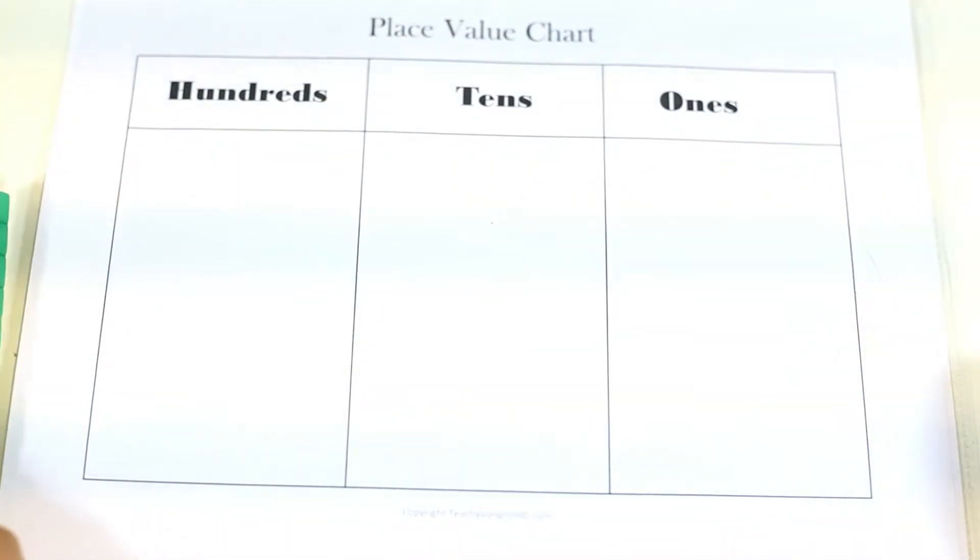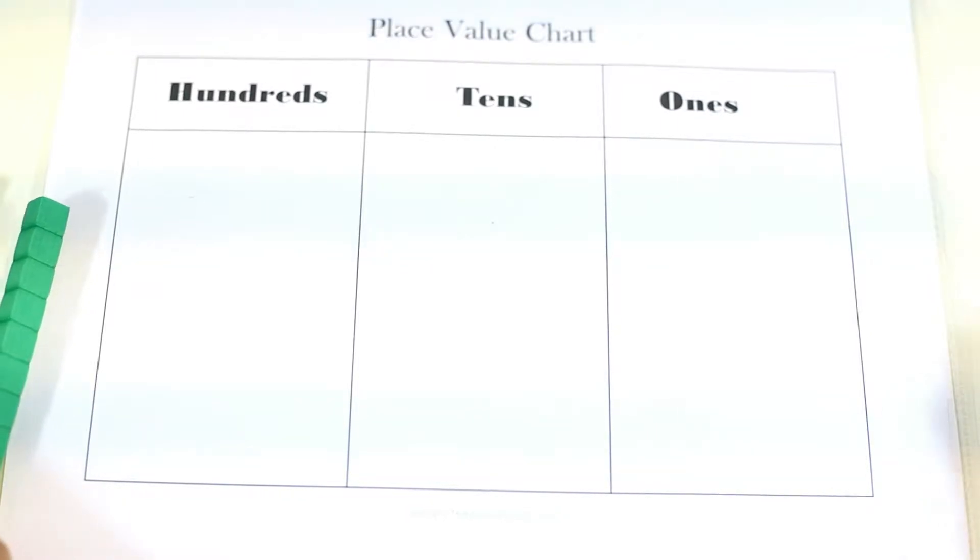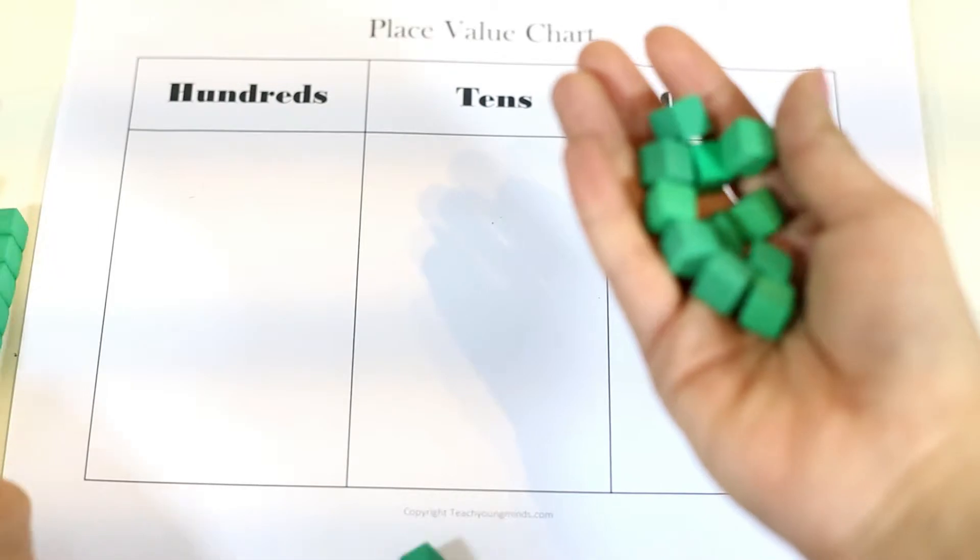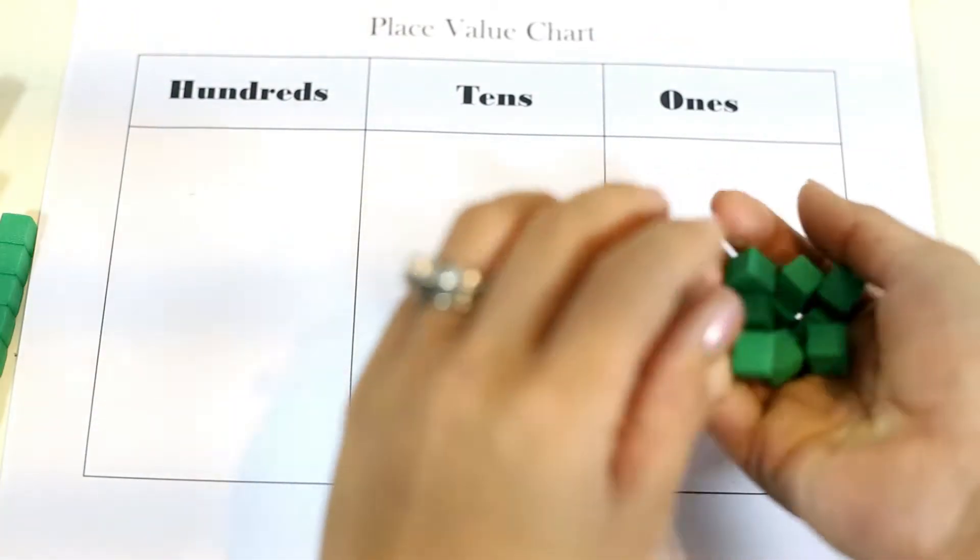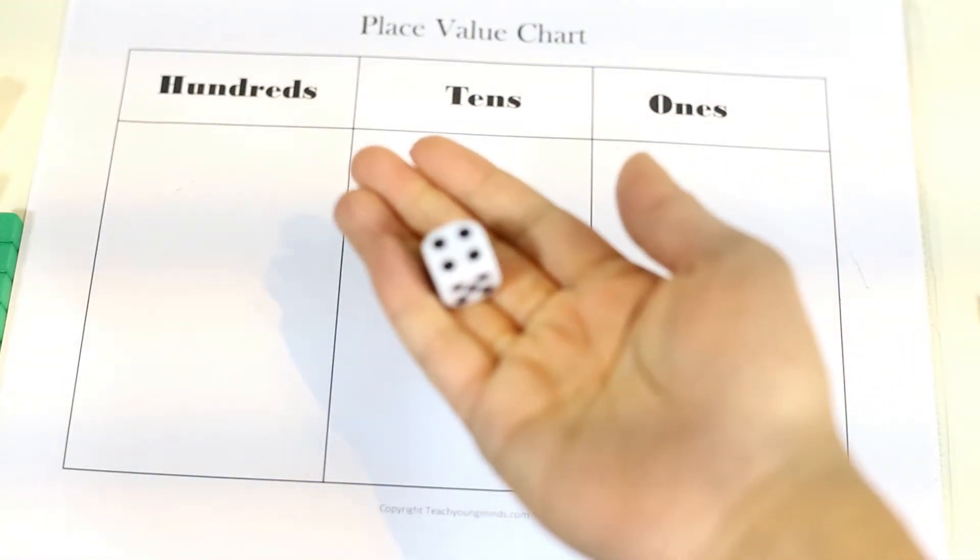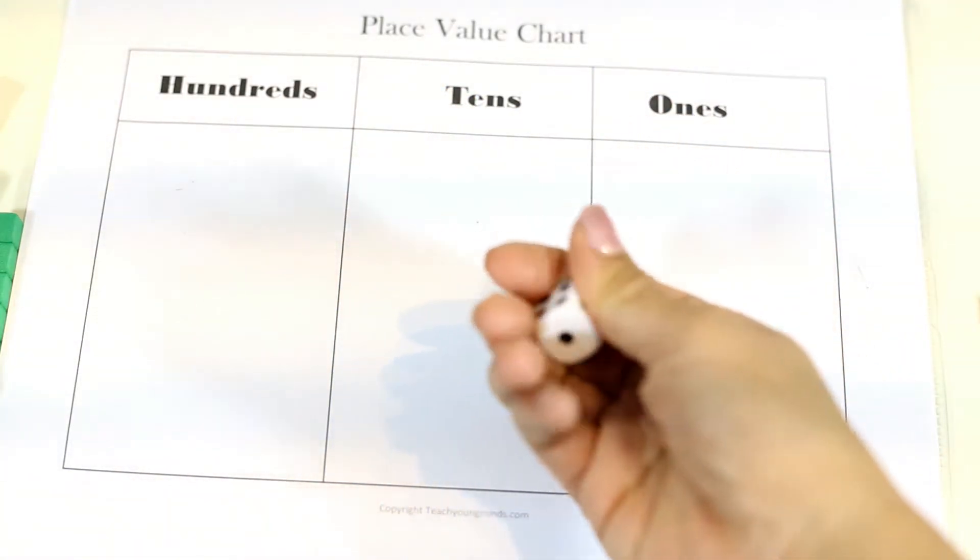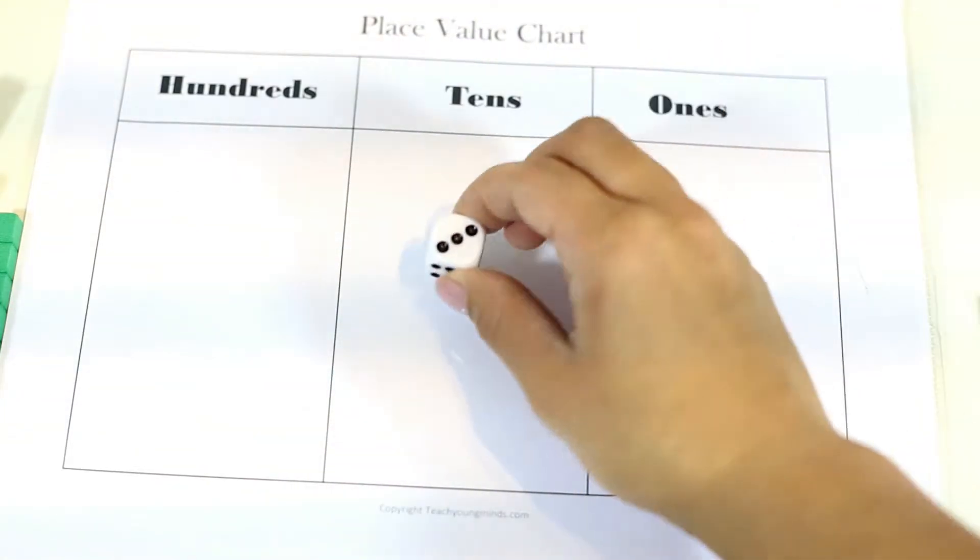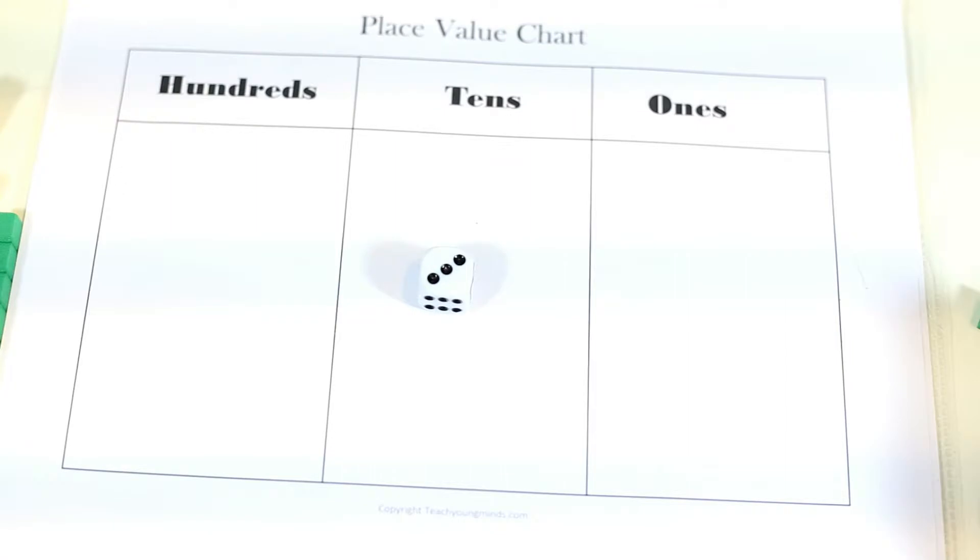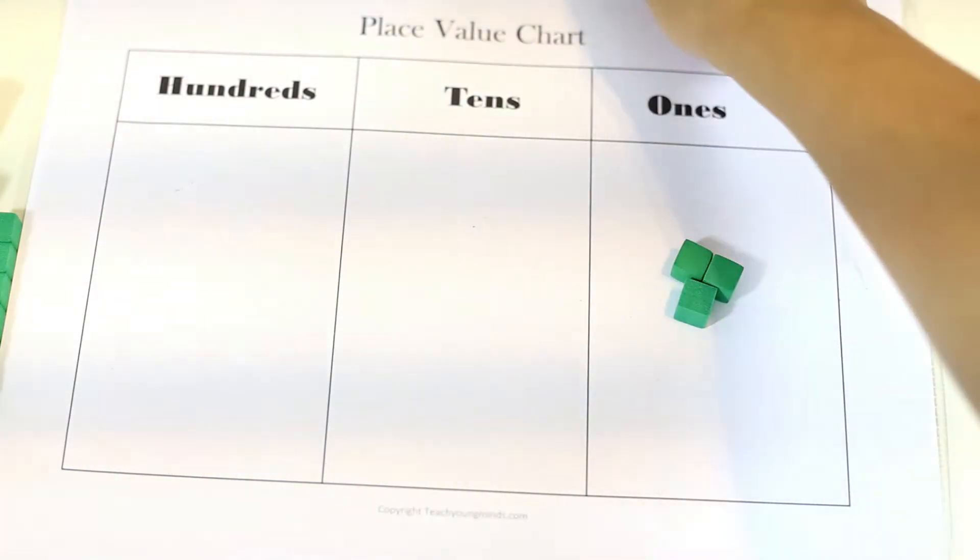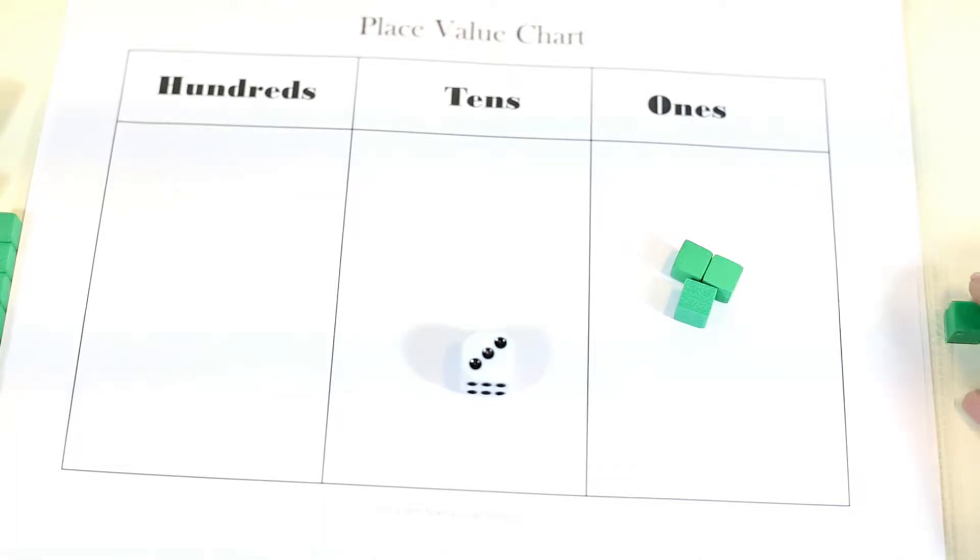In this activity, the learner starts to understand that ones are grouped into tens when they get a collection of 10 ones. We'll be using dice in this activity, a simple dice. The learner is going to roll. They'll roll a three, and they'll put three counters down. The next learner, they can play on their own or with a partner.